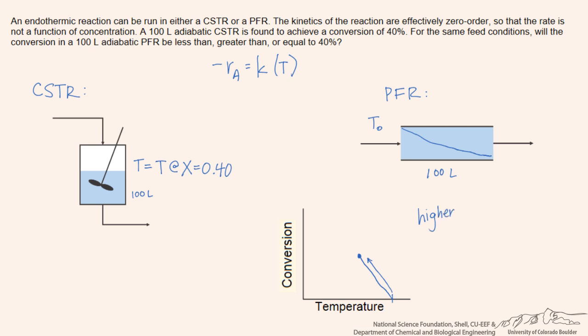That means the rate constant will actually be higher in the beginning region of the PFR, and so because of that, for the same volume PFR, we'll be able to achieve a higher conversion than in a CSTR because we're going to have a higher reaction rate inside that reactor.